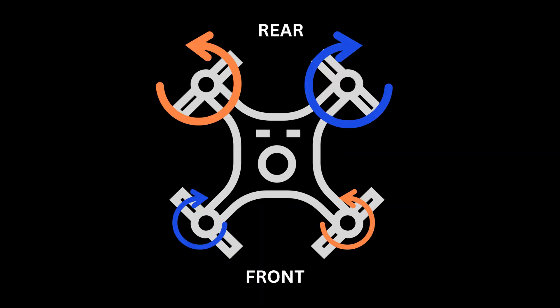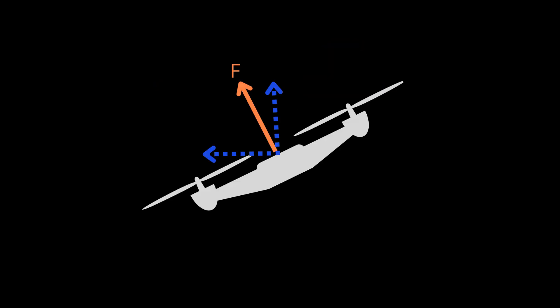To move forward, the drone slows down the front propeller and accelerates the rear propeller, so the drone will tilt forward. If we analyze, now the propellers are not only pushing upwards, but also forwards. That is what causes the drone to move forward.